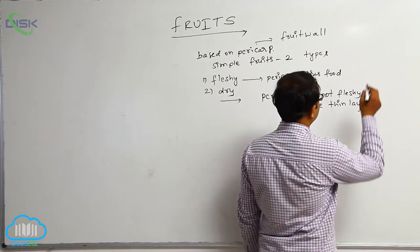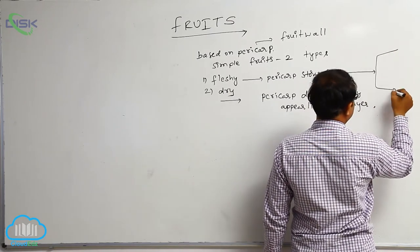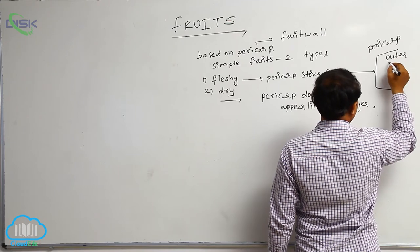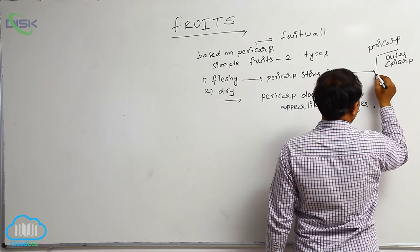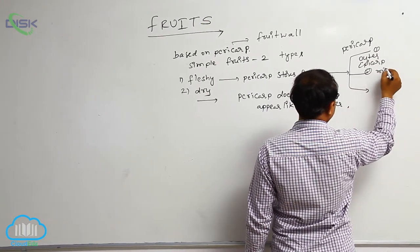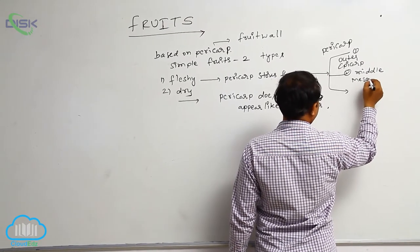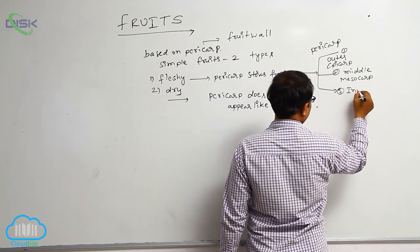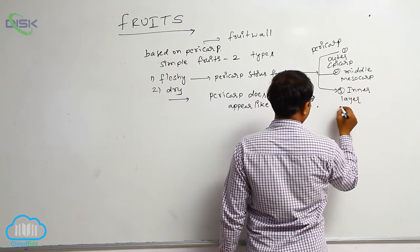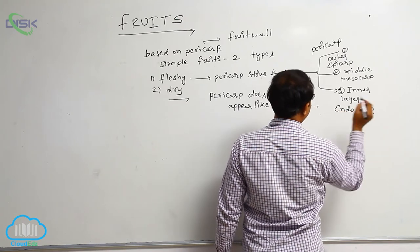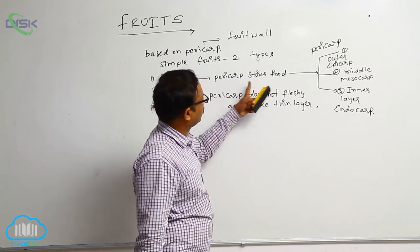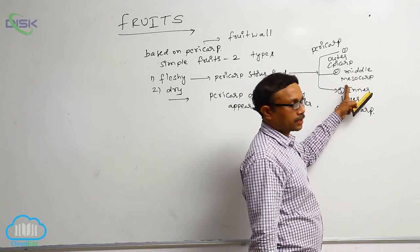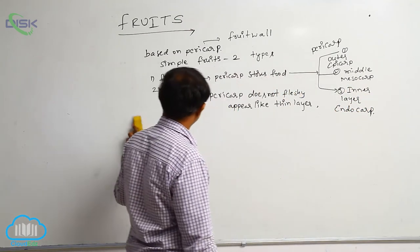Fleshy fruits store food material, and in fleshy fruits the pericarp is divided into three layers: the outer layer is known as the epicarp, the middle layer is known as the mesocarp, and the inner layer is known as the endocarp.